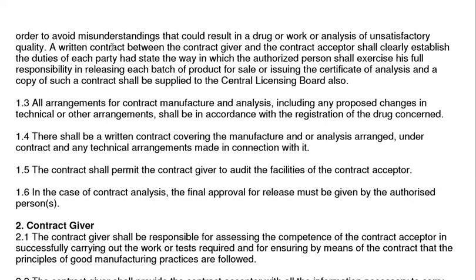A written contract between the contract giver and the contract acceptor shall clearly establish the duties of each party, and shall state the way in which the authorized person shall exercise his responsibilities in releasing each batch of the product for sale or issuance of a certificate of analysis. A copy of the contract shall be forwarded to the Central Assessing Board.